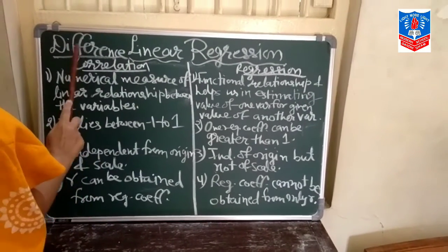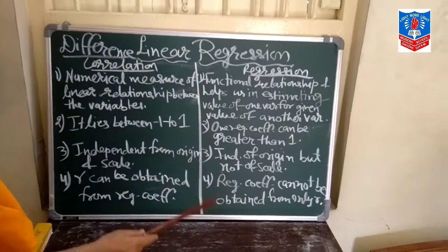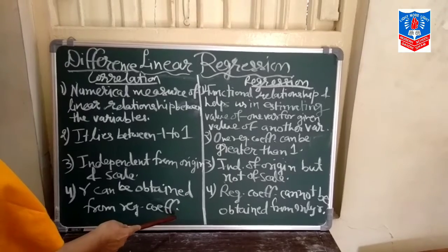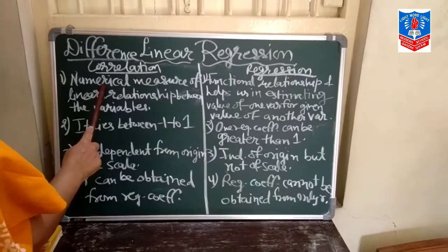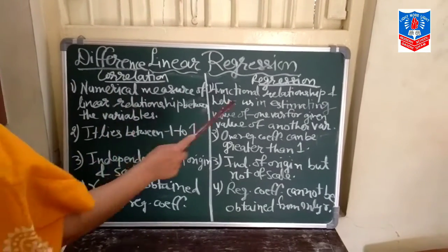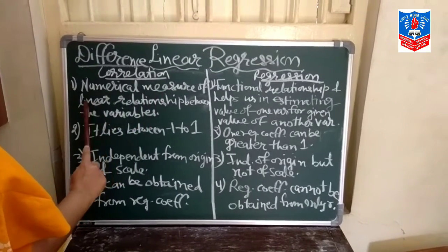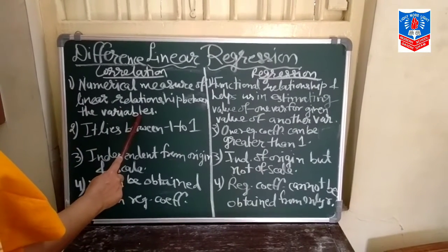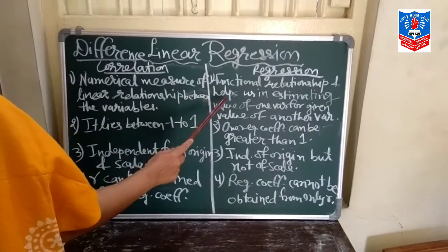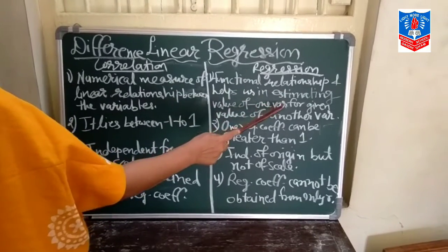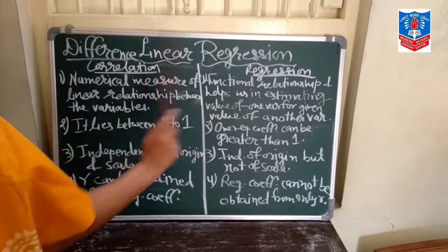The second topic is the difference between correlation and regression. There are four points. If the question comes for two marks, write all four points; if for three marks, write three points. The first difference is meaning: correlation is a numerical measure of the linear relationship between variables, while regression is a functional relationship that helps us in estimating the value of one variable for a given value of another variable.